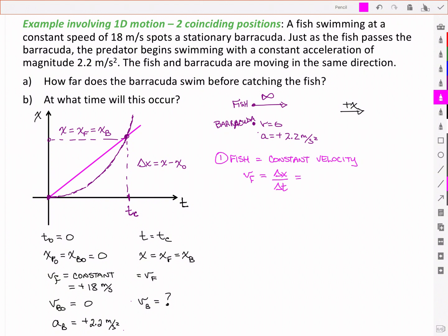In other words, displacement over time. And that's going to be x minus zero and tc minus zero, which gives us its velocity in terms of that common position and the time of capture.